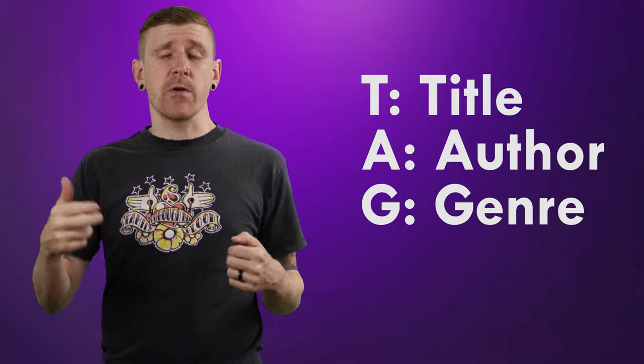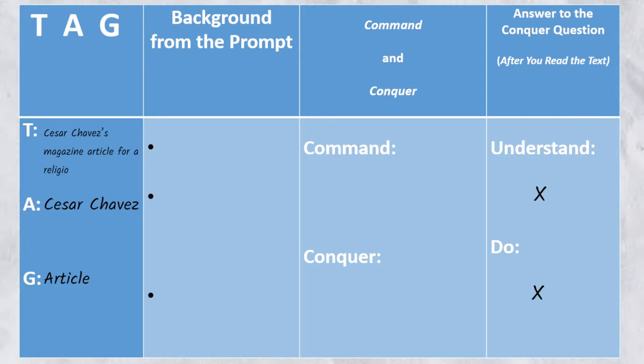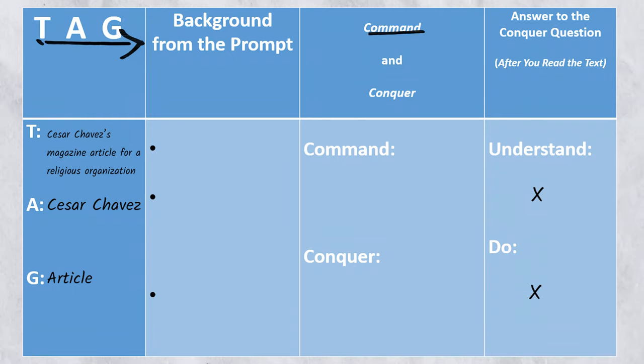TAG stands for title, author, and genre. It's typically easiest to identify these things in this order, but you'll notice pretty quickly that there is no formal title given in this particular prompt. Because of this, we're going to skip the title for the moment and just label the author and the genre. The author: Cesar Chavez. The genre: article. Since we definitely need to call the reading something when we write our essay, we're going to have to create a title. We'll combine the author, genre, and audience, so we're just going to call it Cesar Chavez's magazine article for a religious organization. All of that information was taken right from the prompt. We're not going to put quotes around it or anything, because it's not a formal title.